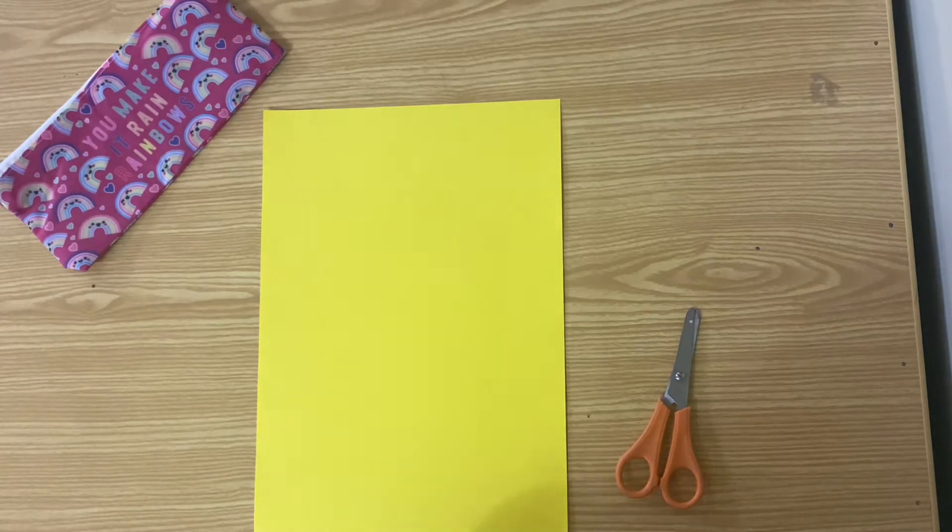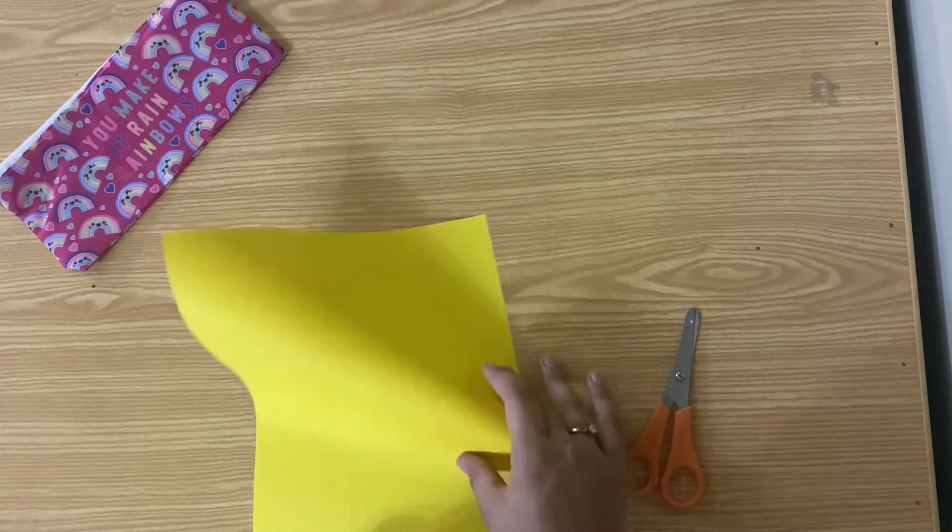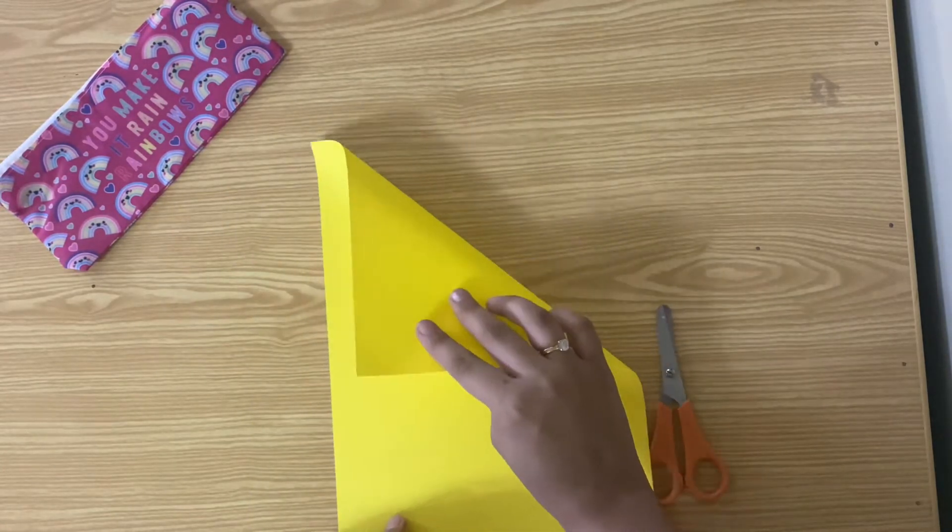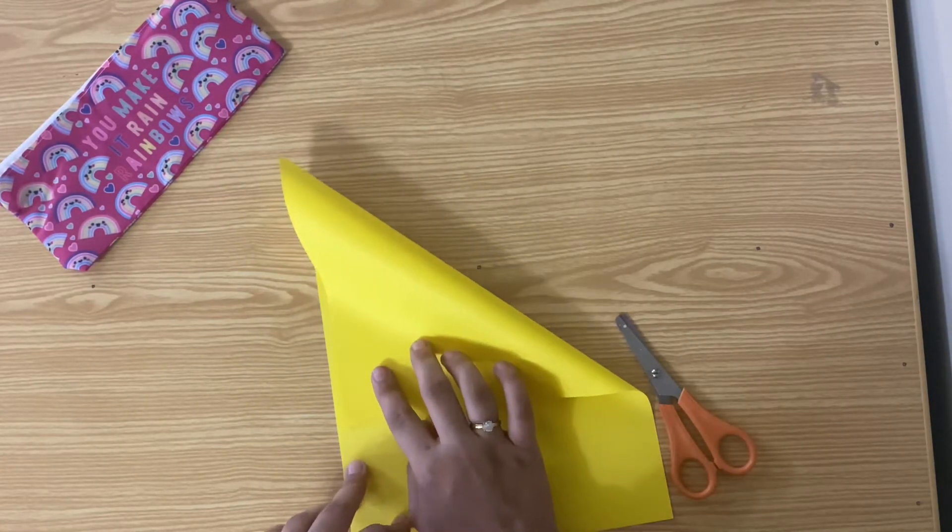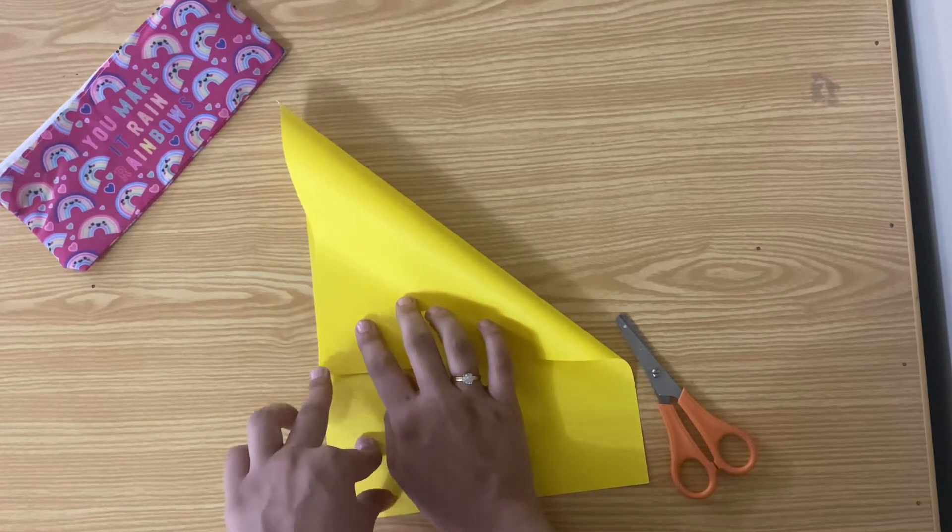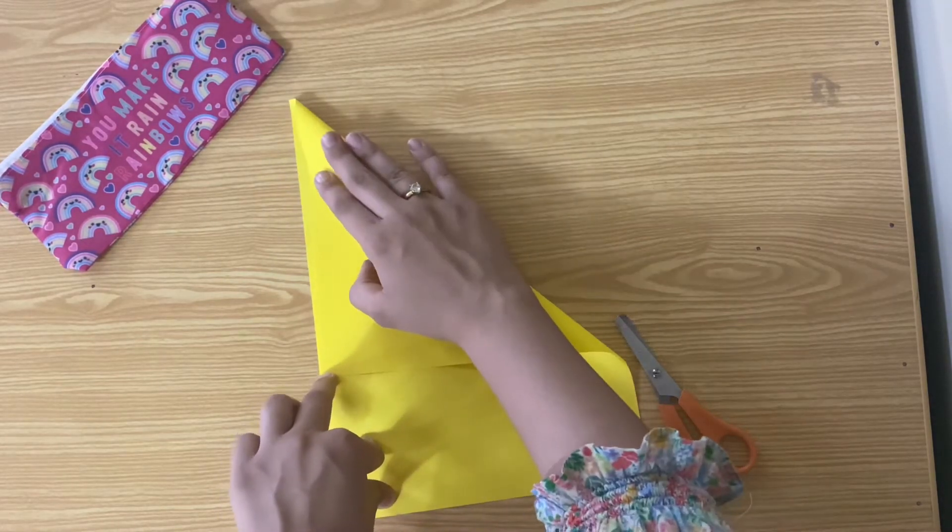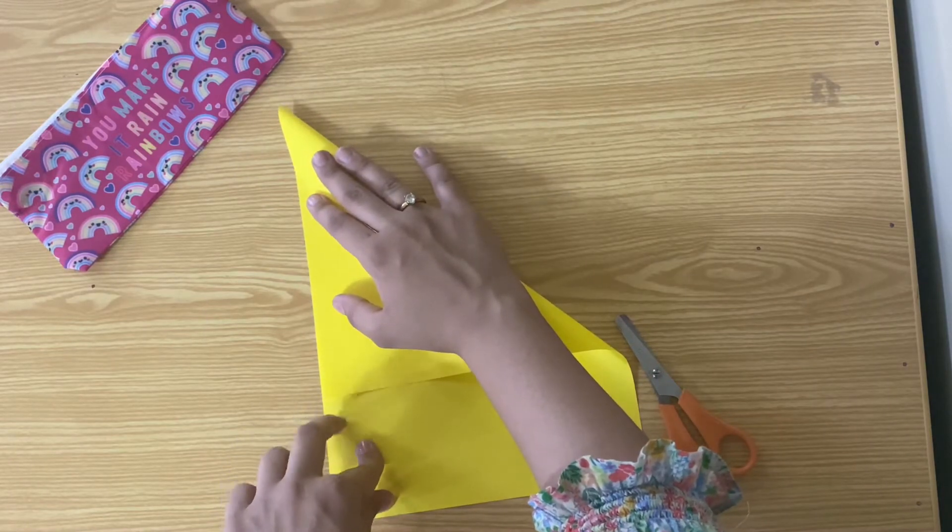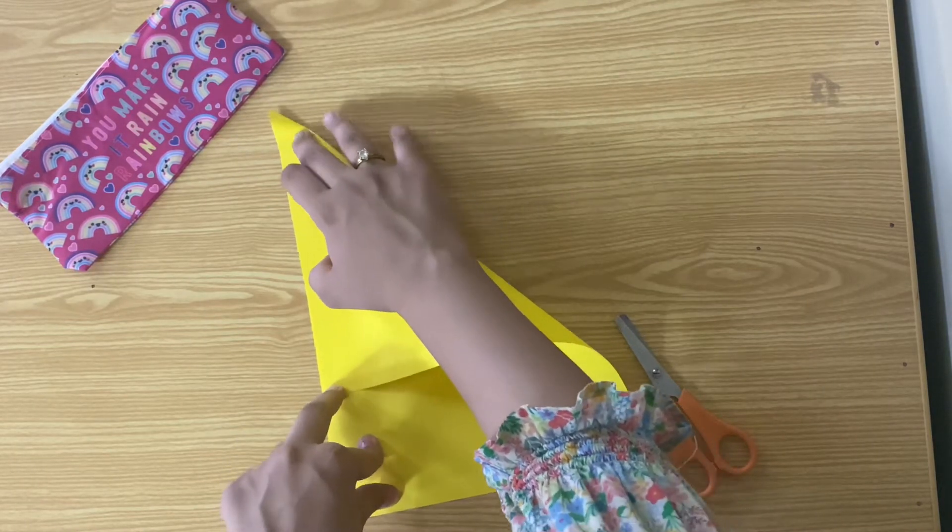First, you're going to need square paper. I'm going to make this A4 paper into a square. It doesn't matter what size the square paper is. It can be small or big depending on the size of butterfly you want. If you want a big butterfly, you can use big paper like me.